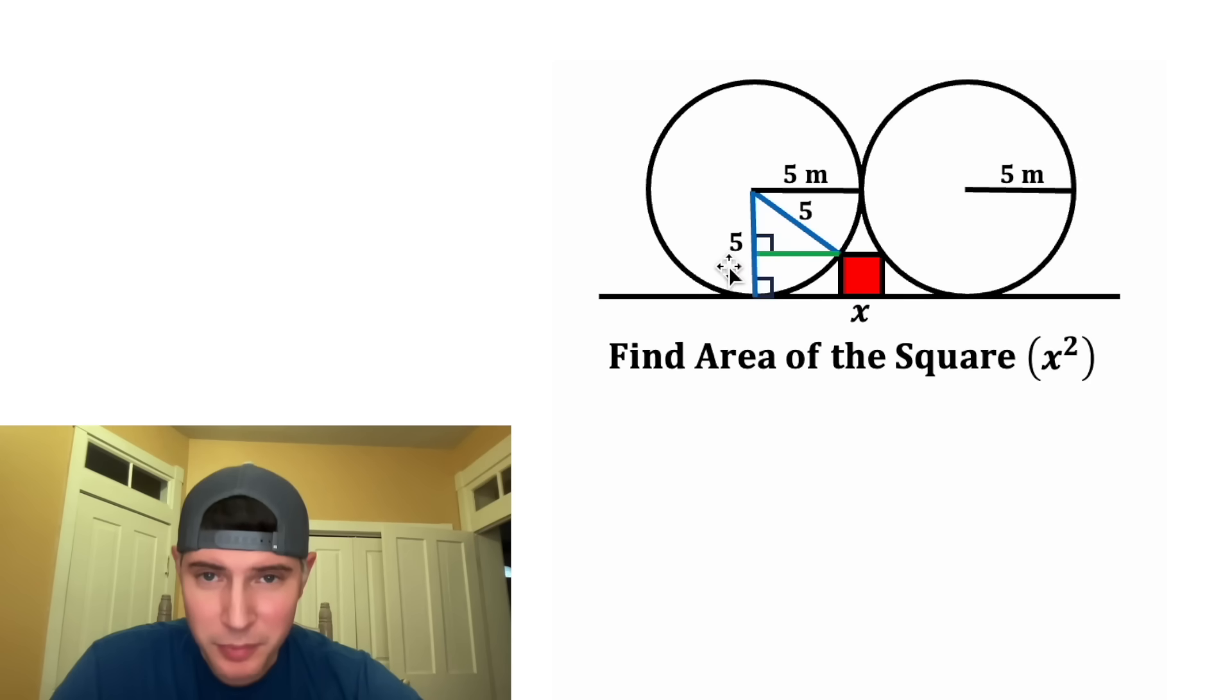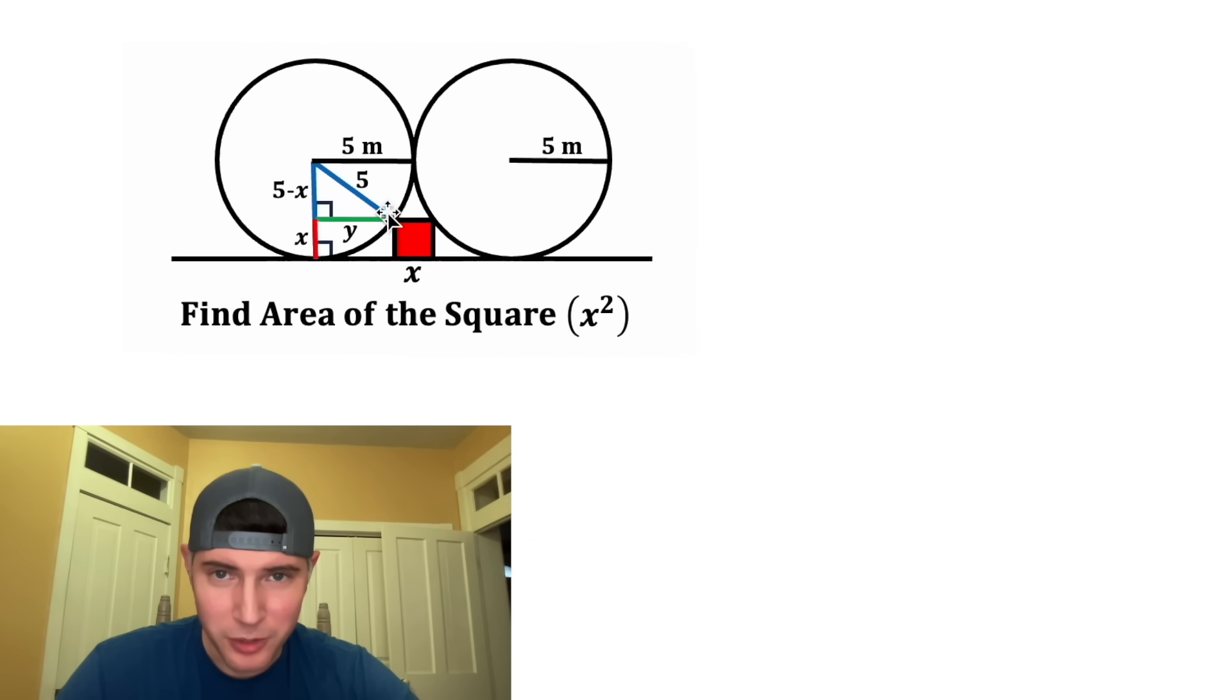So with this setup, this red portion of the line right here, it's the same thing as the height of this square. So it will also have a length of X. And since this whole thing has a length of five, this remaining blue portion will be five minus X. And then let's call this green line Y. We now have a right triangle right here.